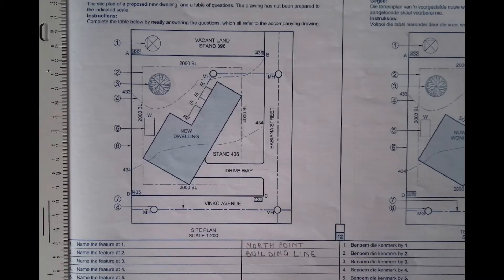So whatever it is that you are going to be building or that you want to be in your stand must not go over that building line. Whether it's a swimming pool, whether it's trees, everything, even the building itself should be within that line. So that is the purpose of a building line.